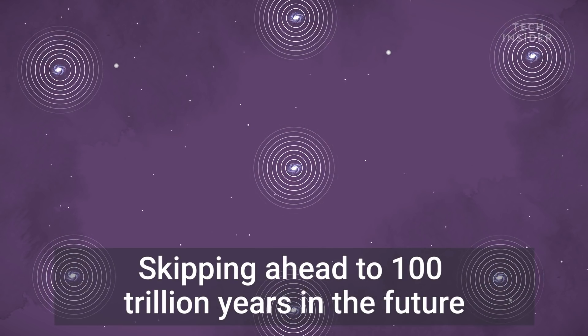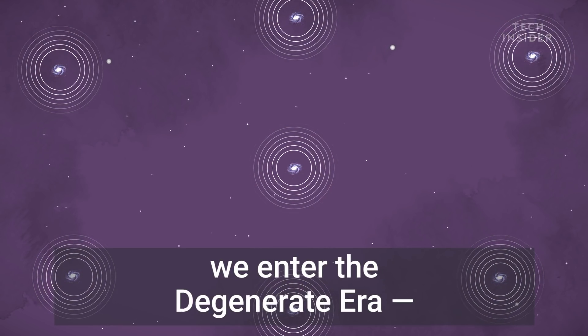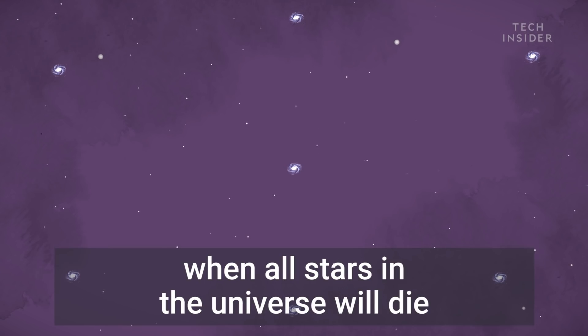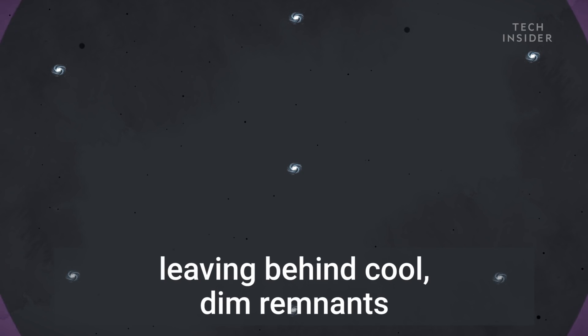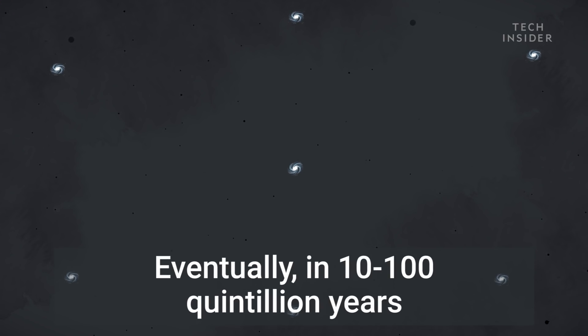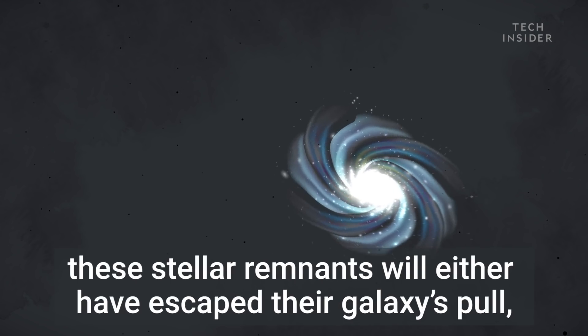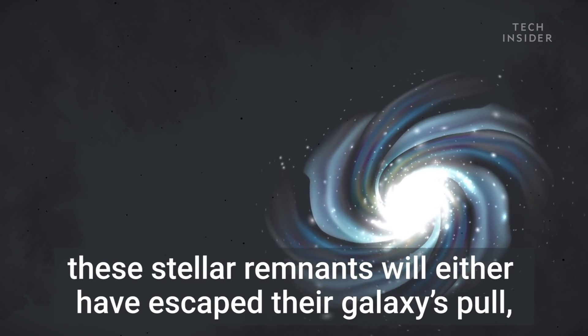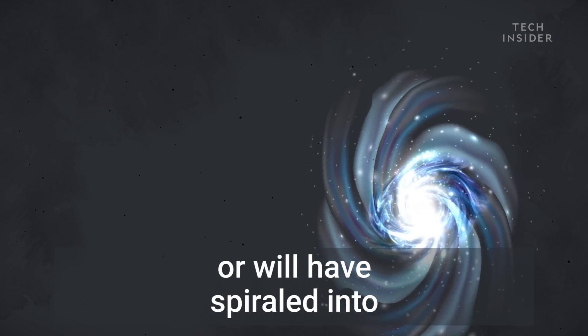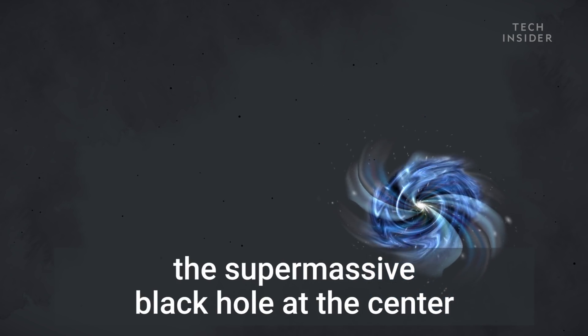Skipping ahead to 100 trillion years in the future, we enter the degenerate era, when all stars in the universe will die, leaving behind cool, dim remnants. Eventually, in 10 to 100 quintillion years, these stellar remnants will either have escaped their galaxy's pull or will have spiraled into the supermassive black hole at the center.